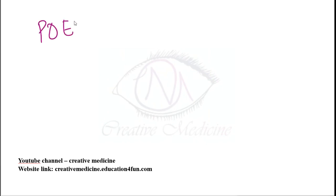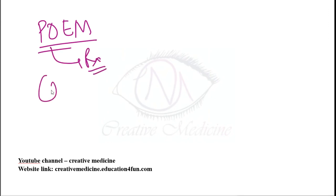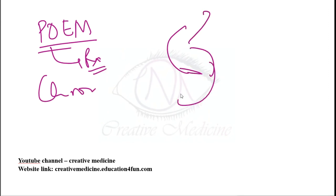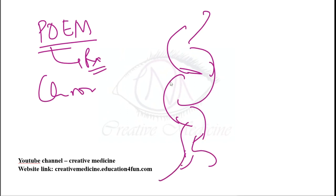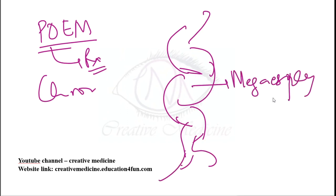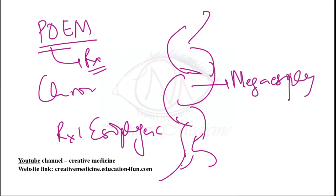Per-oral endoscopic myotomy (POEM) is used in treatment of achalasia cardia. In chronic cases, massive dilatation of the esophagus (megaesophagus or sigmoid esophagus) occurs, requiring esophagectomy.